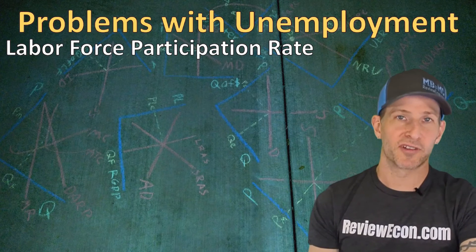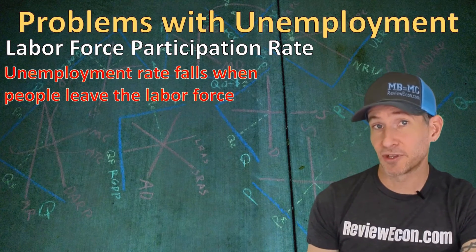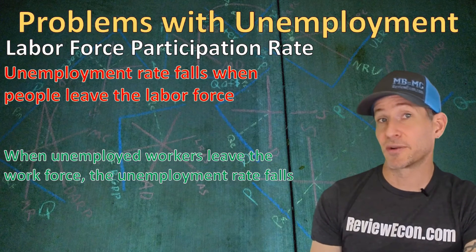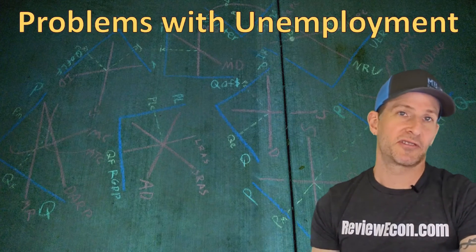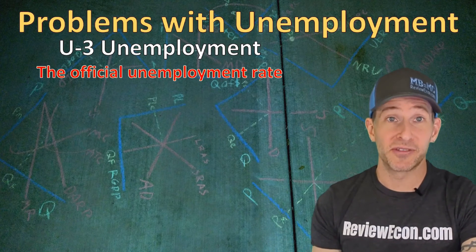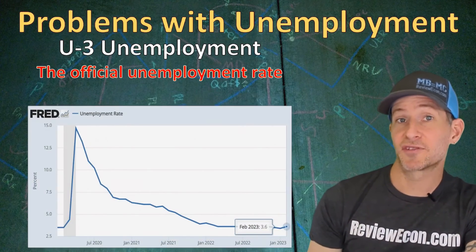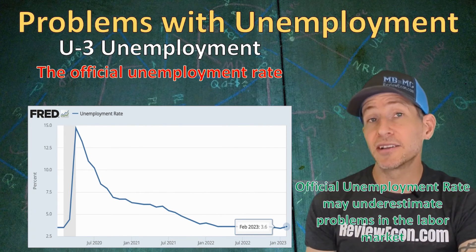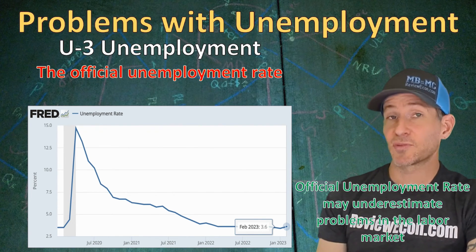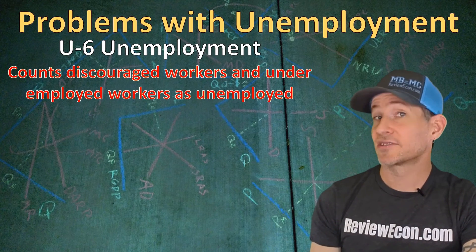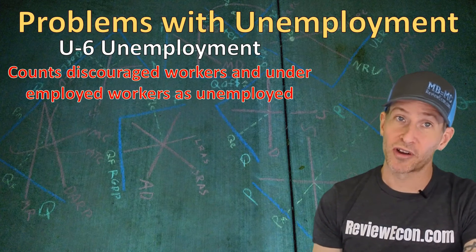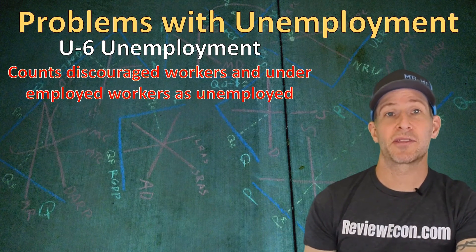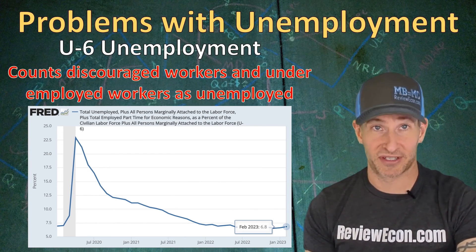Another issue is the labor force participation rate. When people leave the labor force because they've stopped looking for work, the unemployment rate falls even though they haven't found new jobs — our labor force has simply shrunk. The official unemployment rate seen in the newspaper is the U-3 rate; in February 2023 it was 3.6% in the United States. However, it may underestimate problems in the labor market. The U-6 rate, sometimes called the true unemployment rate, counts both discouraged and underemployed workers as unemployed. In February 2023, the U-6 rate was 6.8% in the United States.